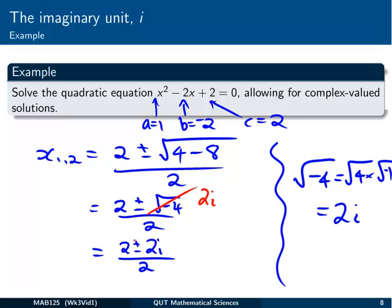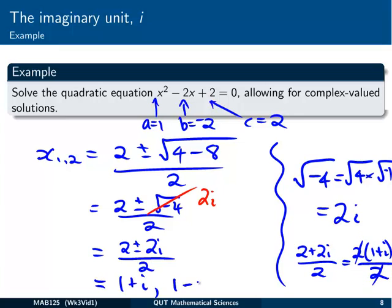There's a common factor on the top here, 2 plus 2i, I should just show you. 2 plus 2i over 2, it's 2 outside of 1 plus i over 2, so the 2's cancel. So we've got 1 plus i, and also 1 minus i. The 2's cancel for the 1 minus as well. You can just imagine replacing those with minuses. So we've got our 2 solutions to the quadratic, 1 plus i and 1 minus i.